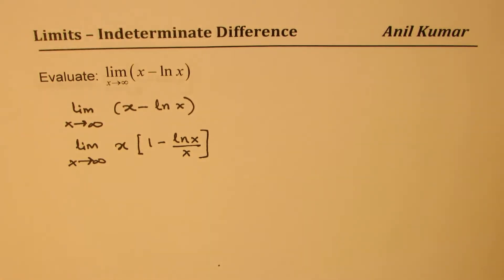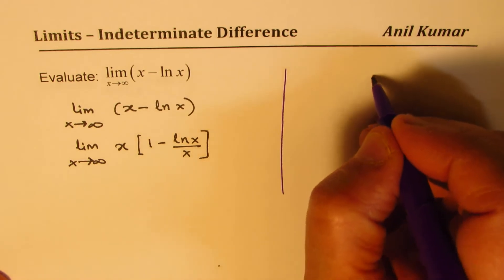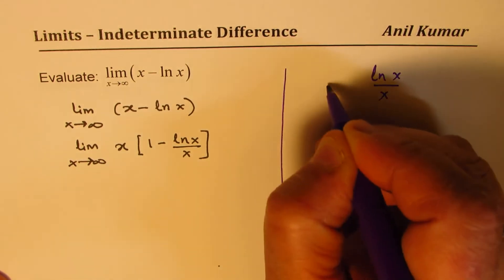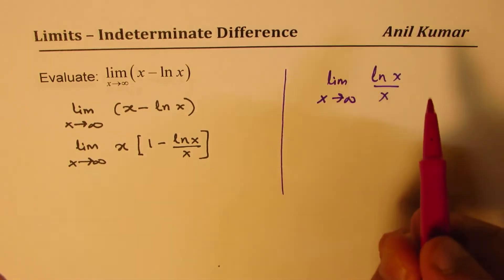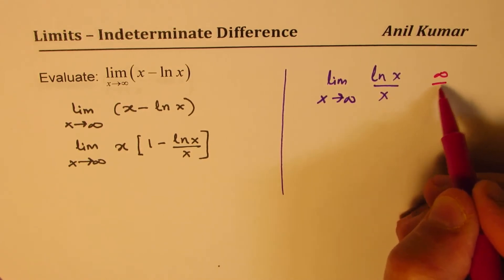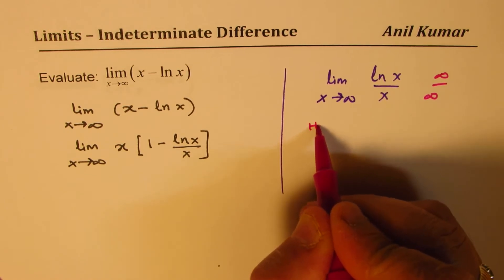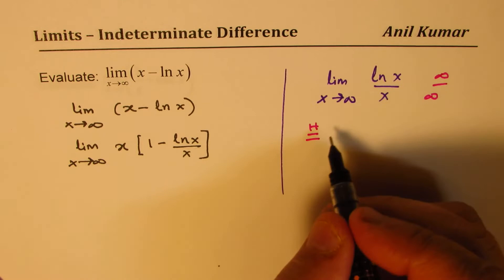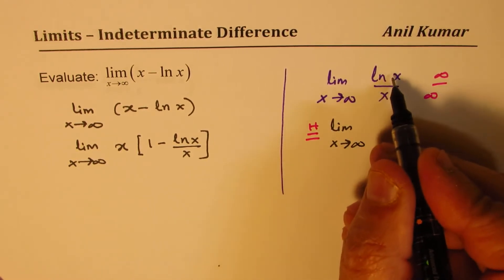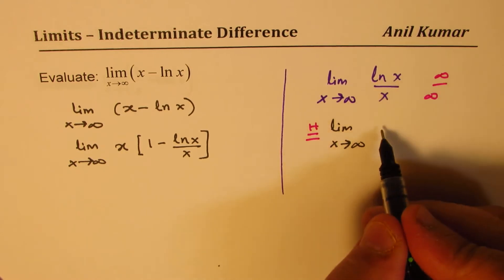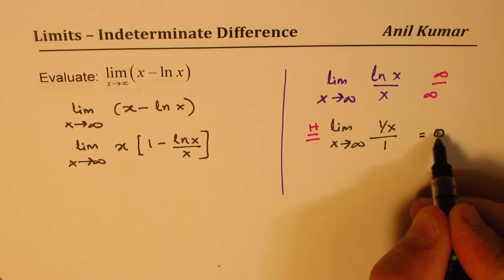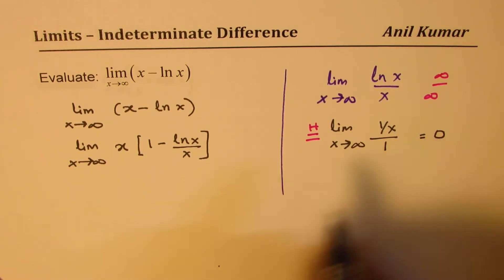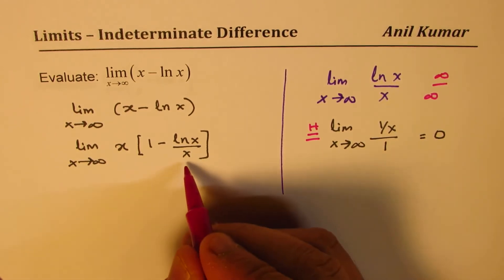Now, what is the limit of ln x over x as x approaches infinity? This is of the form infinity over infinity, so we can apply L'Hopital's rule. The derivative of ln x is 1/x and the derivative of x is 1, giving the limit as x approaches infinity of (1/x)/1. Substituting infinity, 1 over a large value is 0, so this portion equals 0.